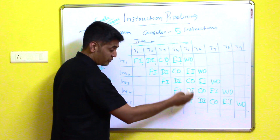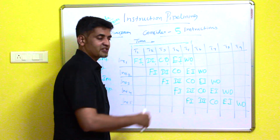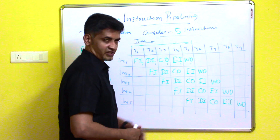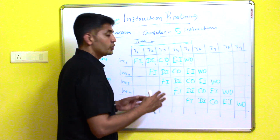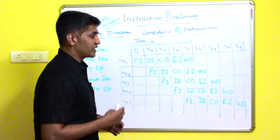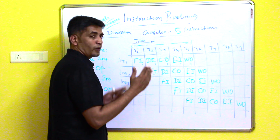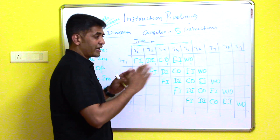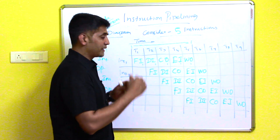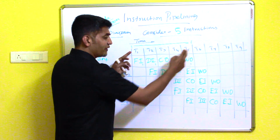Continuing at time t5, instruction four is decoded and instruction five is fetched. You can ask: what is the major advantage? Consider if only one instruction is executed at a time — from t1 to t5, only one instruction is executed and no other instructions are fetched or decoded.